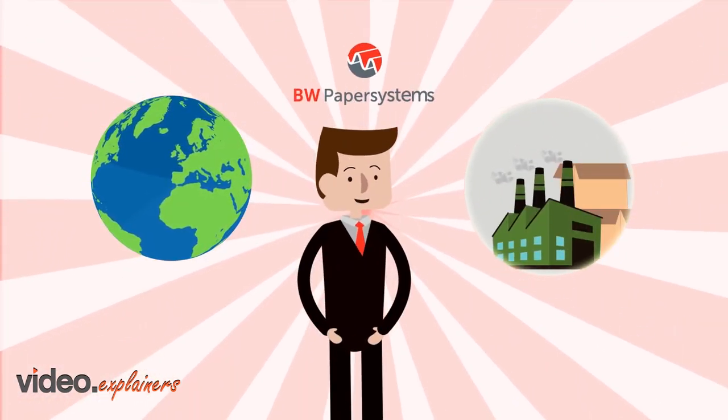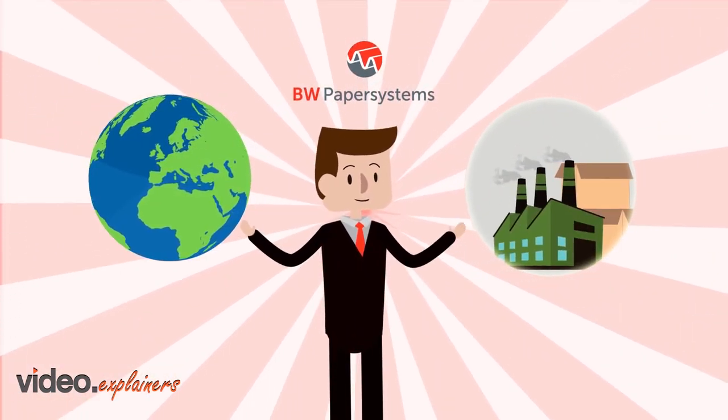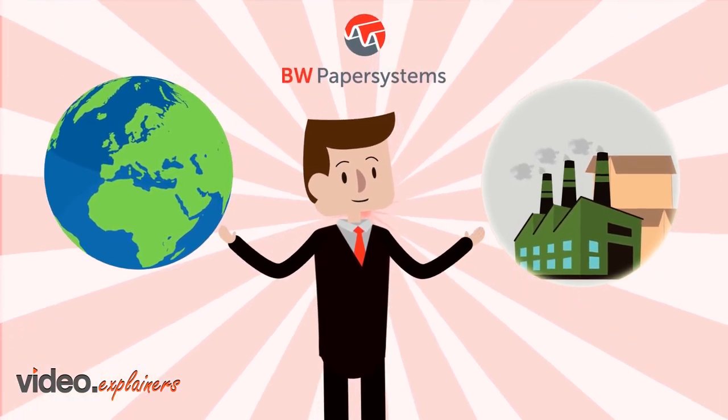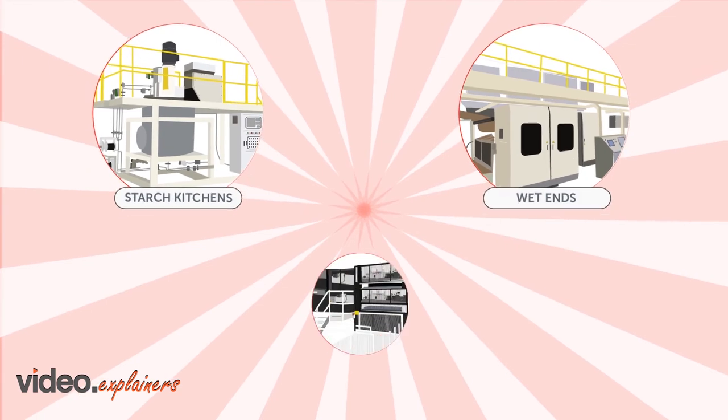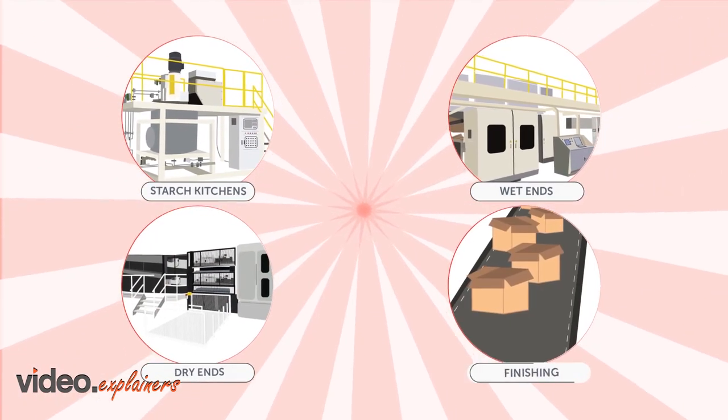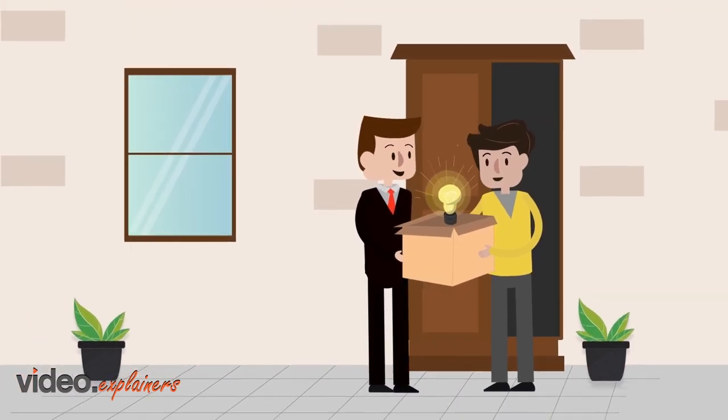BW Paper Systems. From starch to finish, we are the only global supplier that can outfit a complete box plant. From starch kitchens and complete wet ends, from dry ends to the finishing hall, we can deliver solutions specifically to meet your needs.